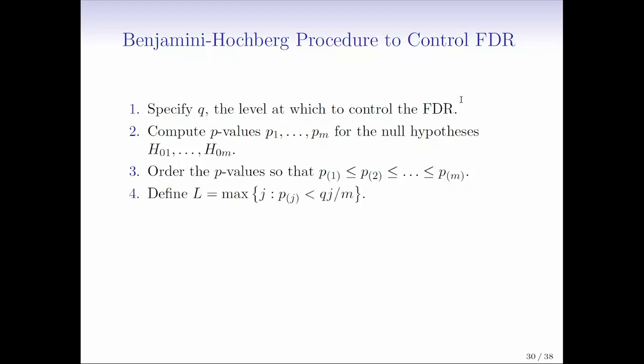And now I'm going to define L. L is going to be the largest value of J, such that the Jth smallest P value is less than QJ over M. Oh goodness, Gareth, that's quite a mouthful. So again, it's the largest value of J such that the Jth smallest null hypothesis is less than Q, which is my FDR threshold, like maybe 0.1 or something, times J divided by M, where M is the number of null hypotheses. And then we're going to reject all of the null hypotheses that have P values smaller than P sub L, so P values smaller than the Lth smallest P value.